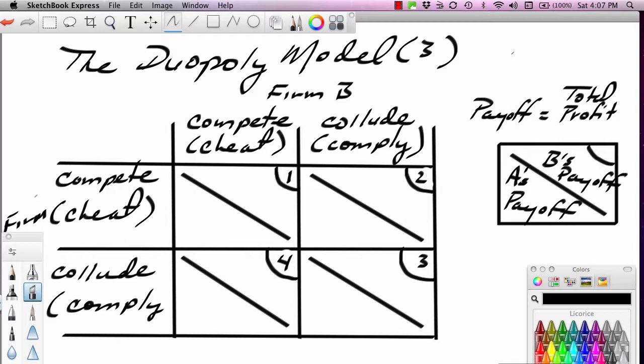A payoff matrix is nothing more than a table that shows the payoffs of the different strategies. Note that what is shown in this table on the vertical axis and on the horizontal axis are strategies: to compete as a strategy, to cheat as a strategy, to comply with a collusive arrangement or to collude. These are strategies.